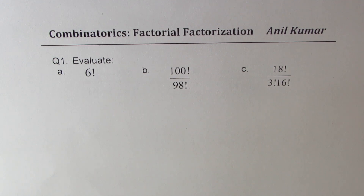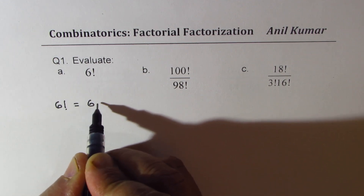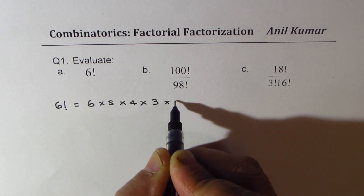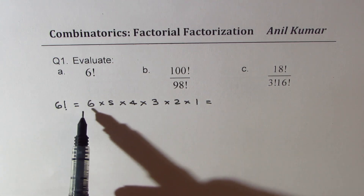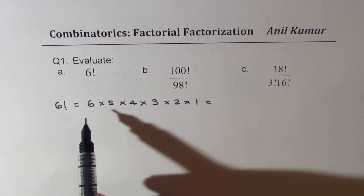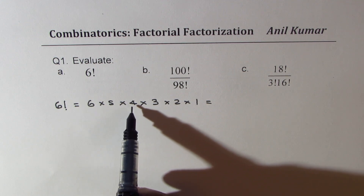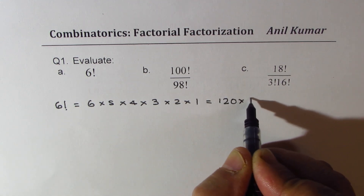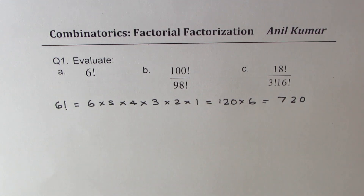Let's begin with the very first one — evaluate factorials. 6 factorial really means 6 times 5 times 4 times 3 times 2 times 1. You can take a calculator and multiply them to get your result. 6 times 5 is 30, 30 times 4 is 120, and 120 times 6 is 720. It's better to use a calculator for these calculations.